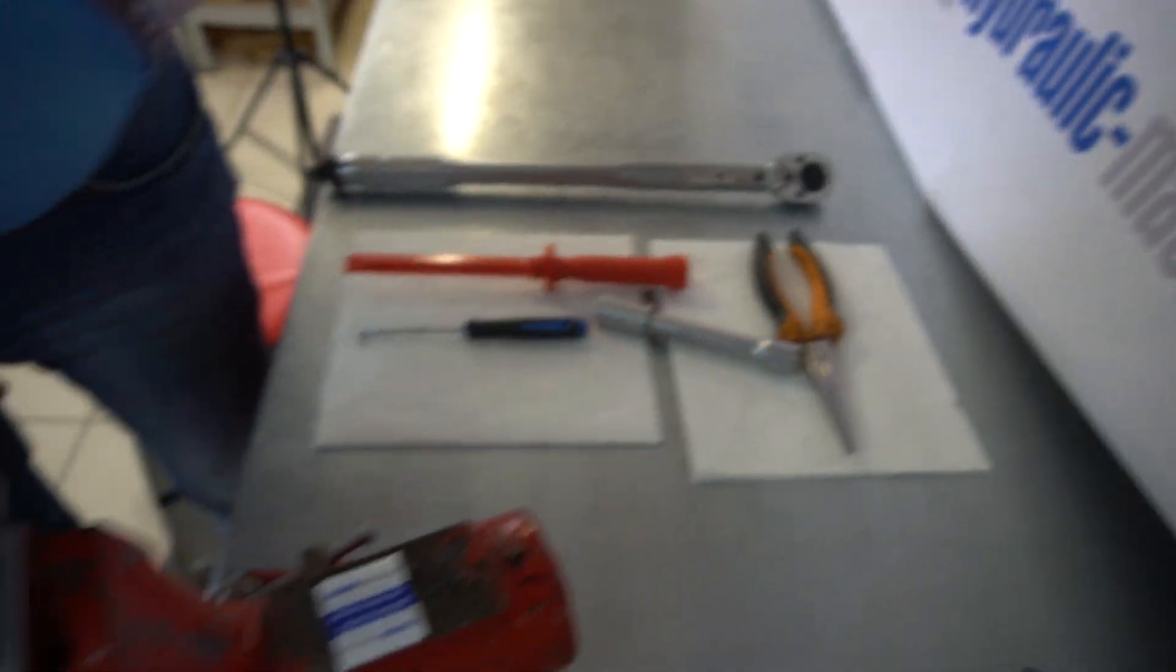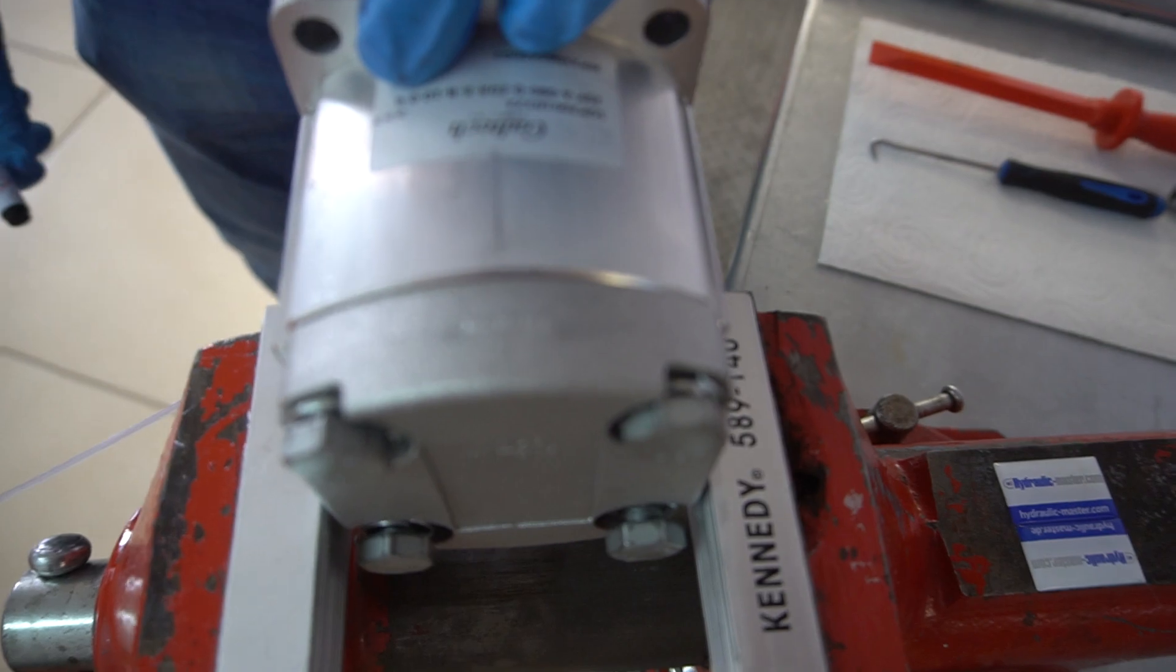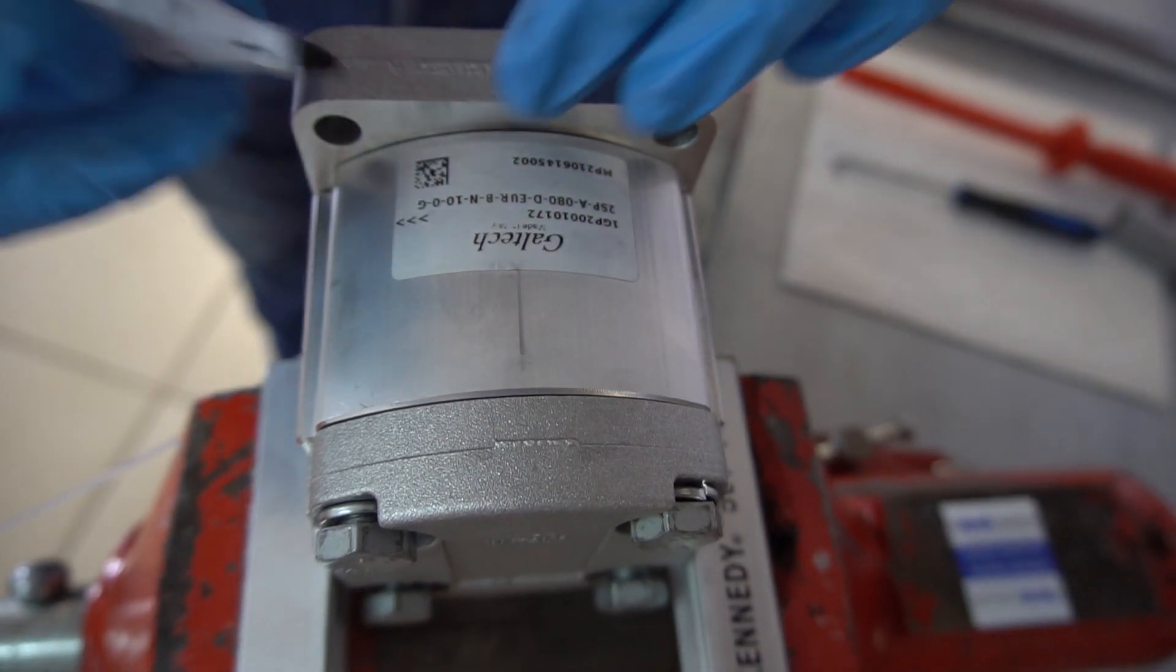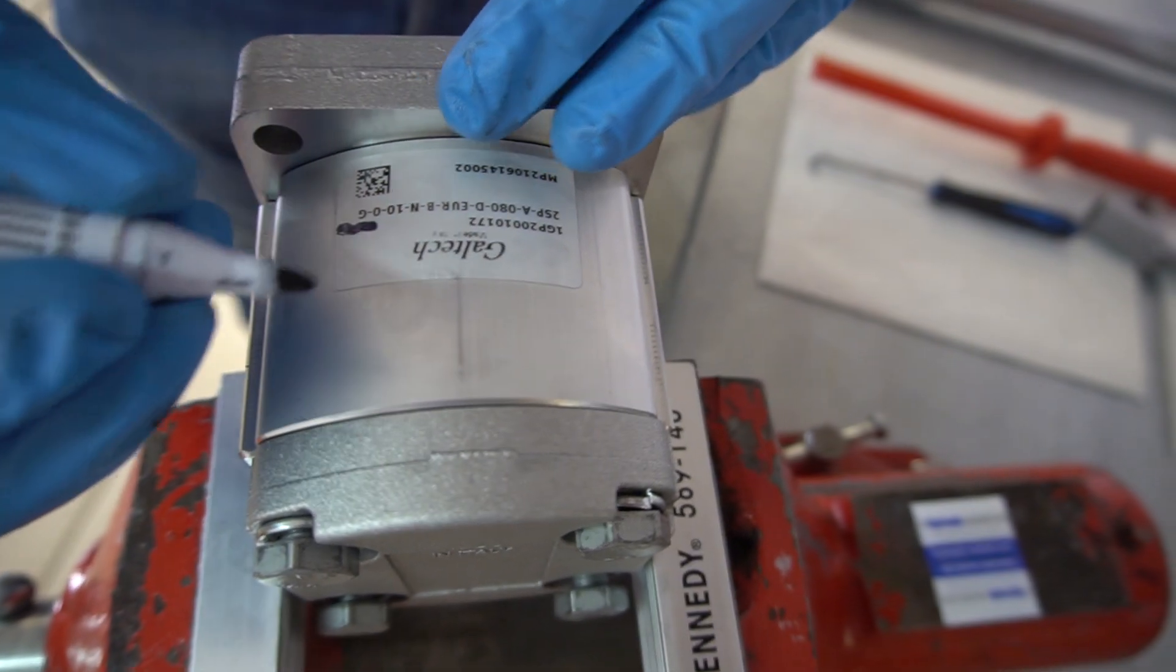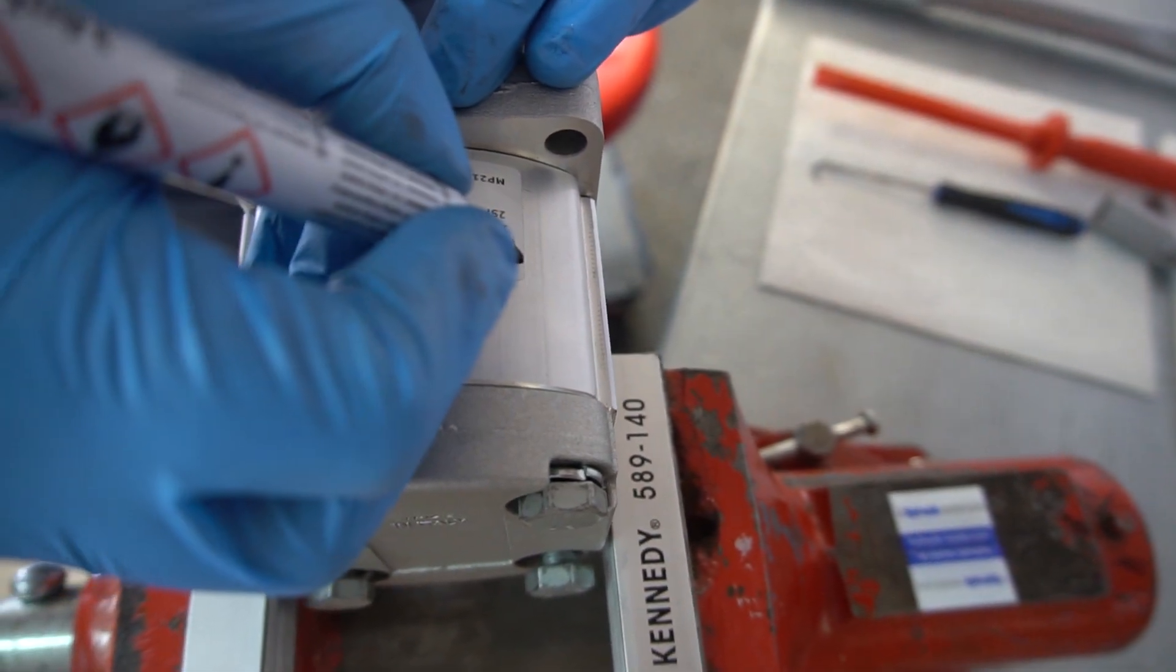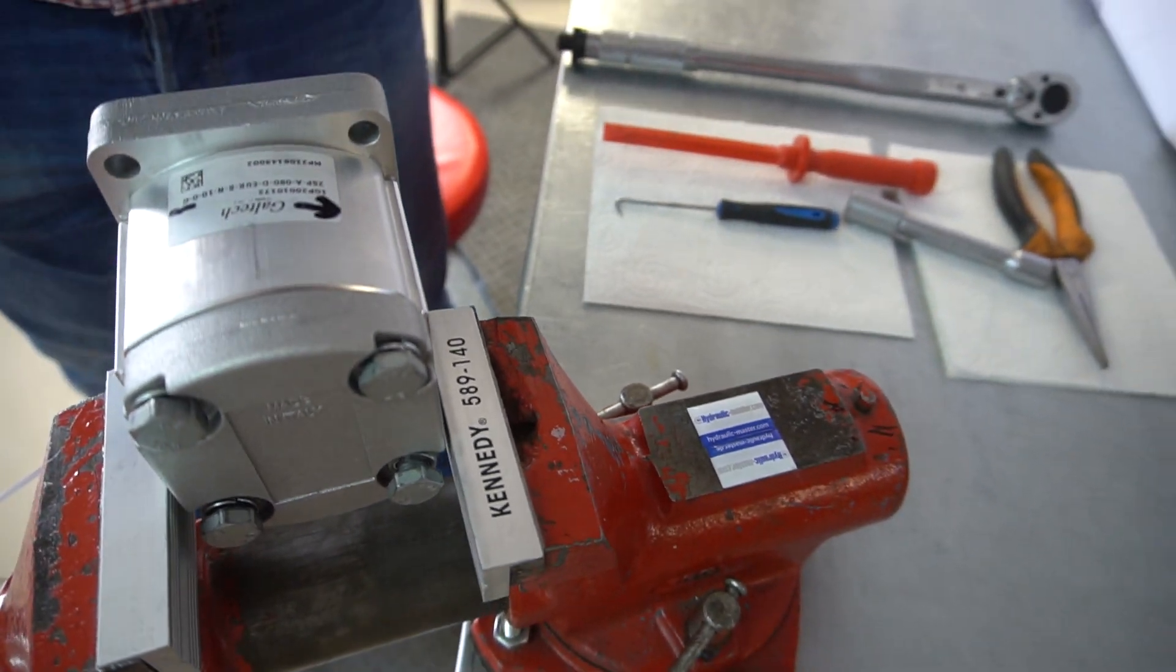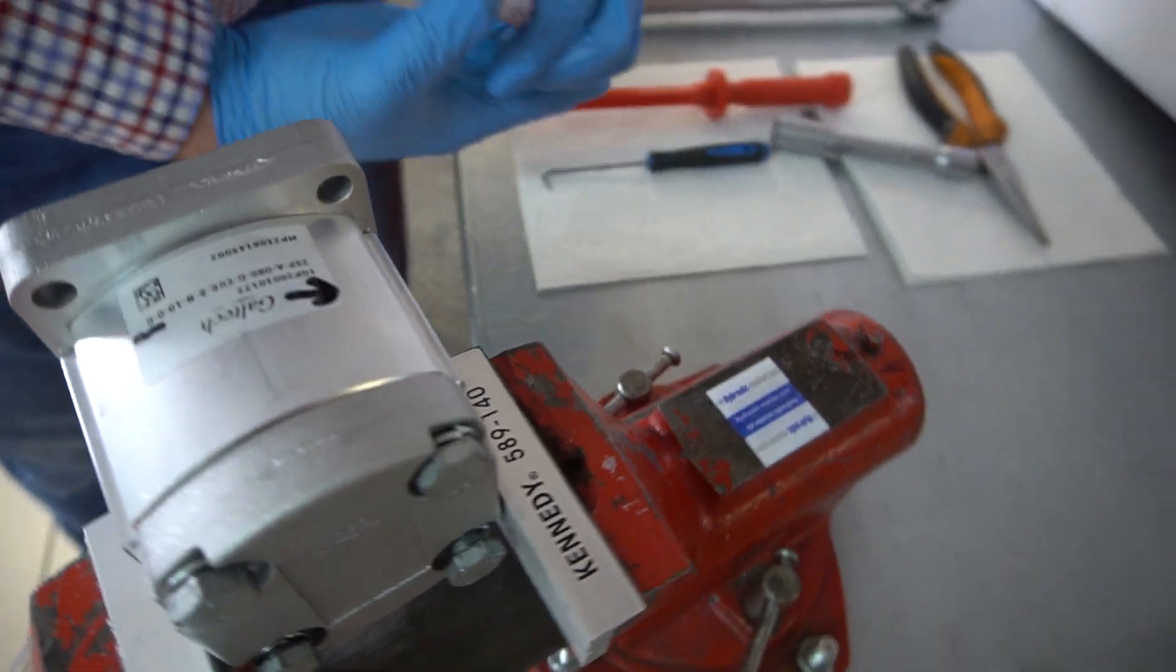You can see on the top of the pump here there's an arrow that denotes the direction of the pump. Because we've switched it around, I'm just going to scrub that out, put a new arrow on. And that's if I work on the pump again or somebody else does, they can see that I've reversed it, so there's no surprises.